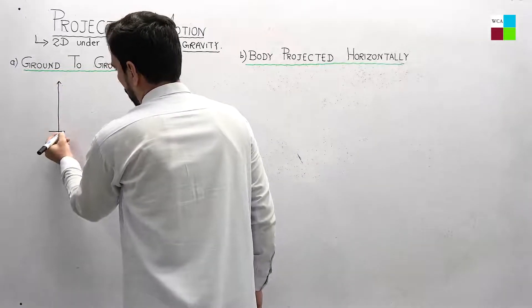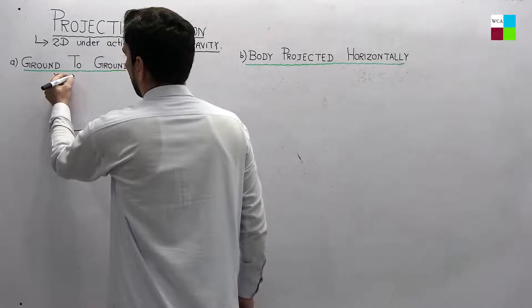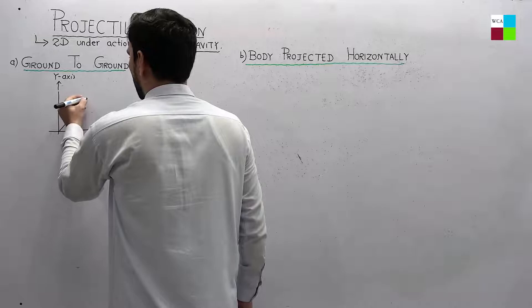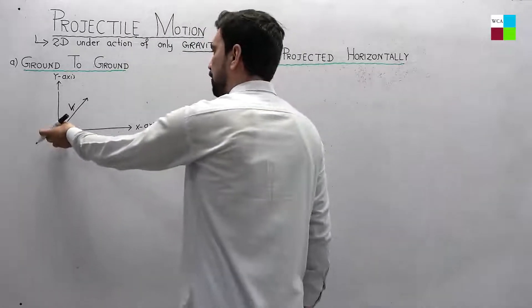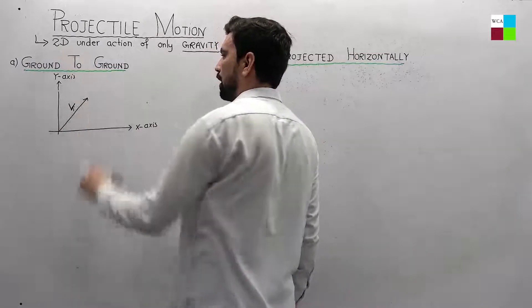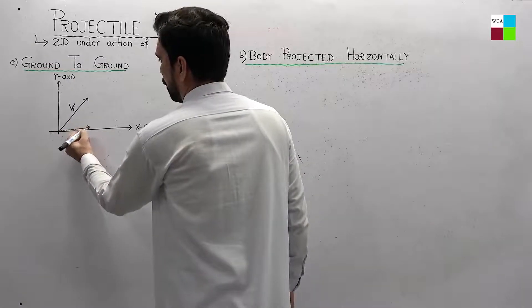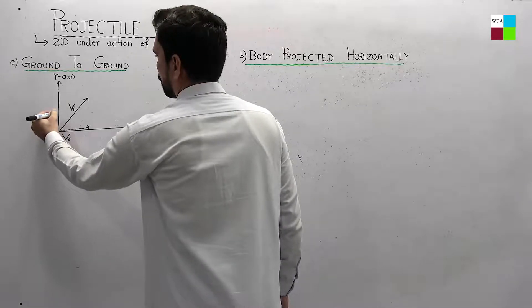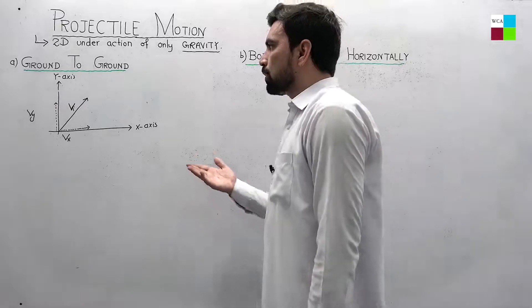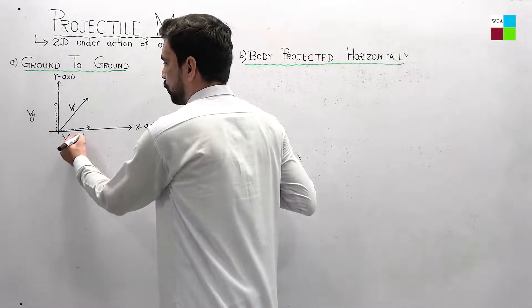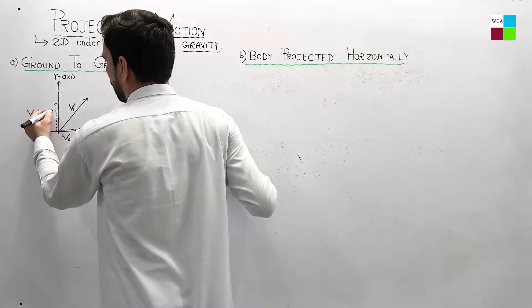Let me draw a coordinate system — this is the x-axis and this is the y-axis. If a body is projected having certain initial velocity v, this velocity has two components: the body is moving along the x-axis and also along the y-axis. One component is known as the vx component and the other is known as the vy component. So the initial velocity components are: vx is equal to vi cos theta, and vy is equal to vi sine theta.